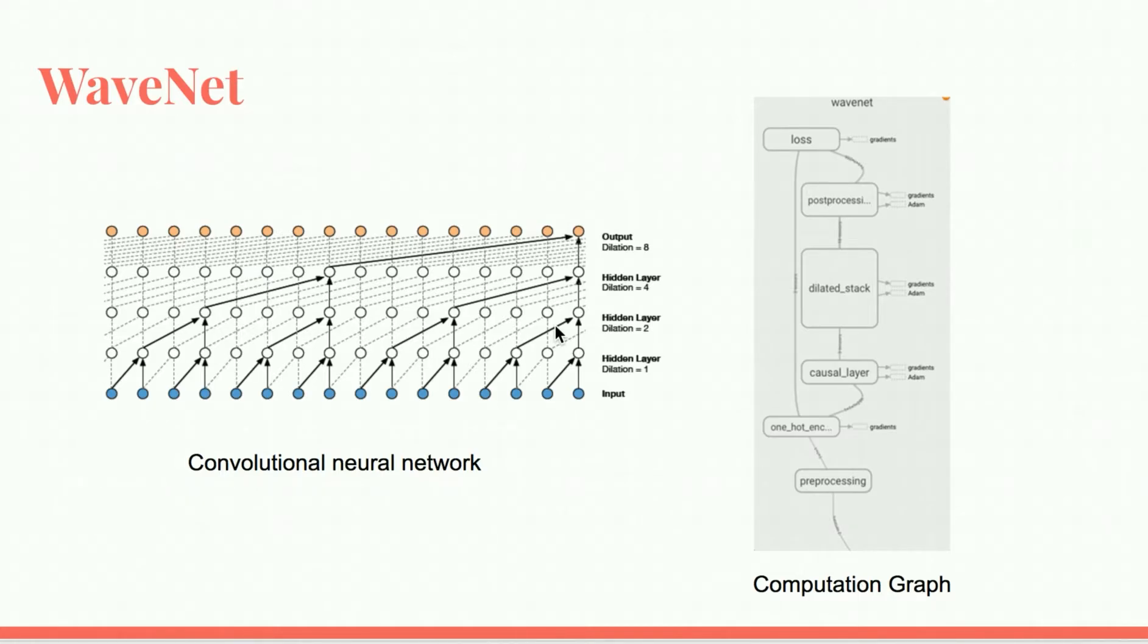WaveNet uses a convolutional neural network where each layer has dilation factors that let its interconnectedness grow exponentially the deeper the data flows through the model. Each generated sample is fed back into the network to generate the next step. Here is the computation graph of the model.